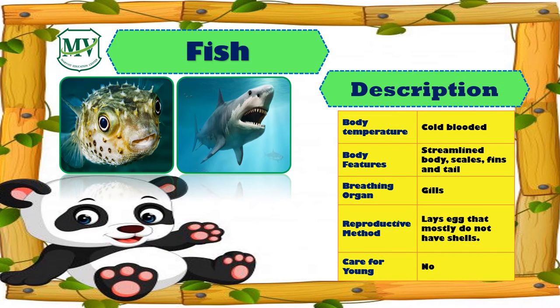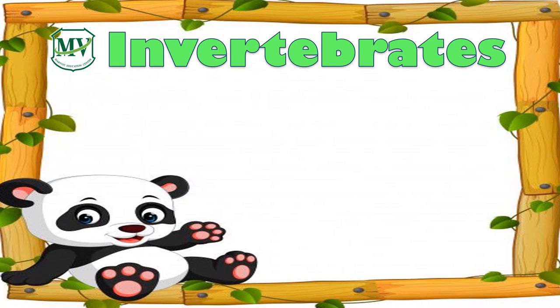Fish are also cold-blooded animals, like sharks and pufferfish. They have streamlined bodies, scales, fins, and tails. And they breathe through their gills. They lay eggs that mostly do not have a shell.